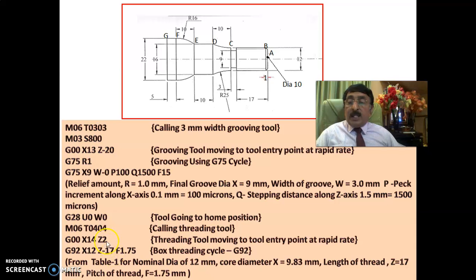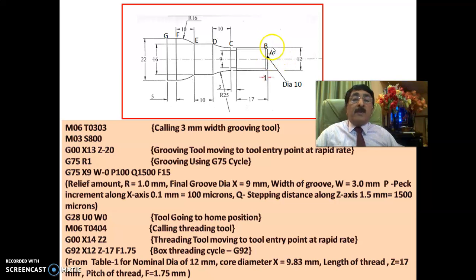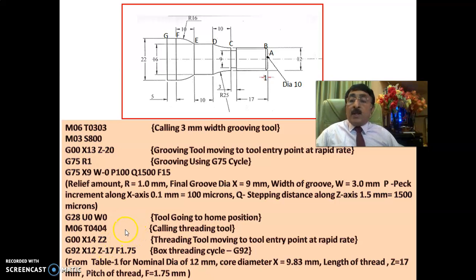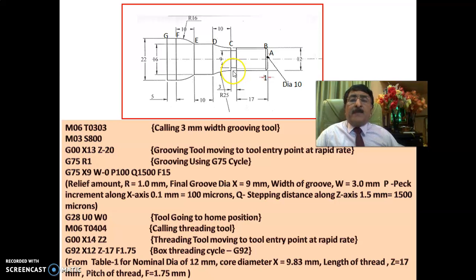Now for the fourth tool — the threading tool. It comes rapidly to X14, Z2. The diameter is 12 and the tool is 2 mm away from the workpiece to avoid collision. G92, X12, Z minus 17: threading is done to a distance of 17 mm. Even if you give Z minus 18 or minus 19, nothing will happen because the groove is there. F1.75 is the pitch.